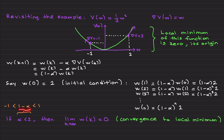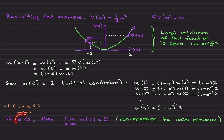If (1 - alpha) is between minus one and one — this is very important — using results from discrete-time difference equations in control theory, as we take the power one, two, three, four, five, this value becomes smaller and smaller and converges to zero. This corresponds to alpha being between zero and two. So the limit as k goes to infinity of w(k) is zero, which is exactly the local — in this case also global — minimum of the function.